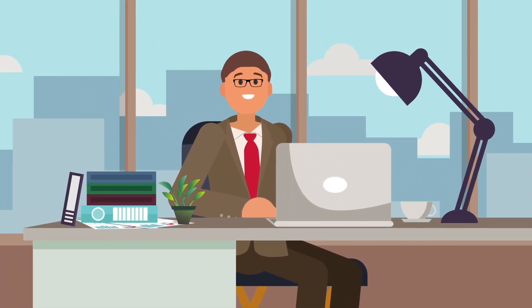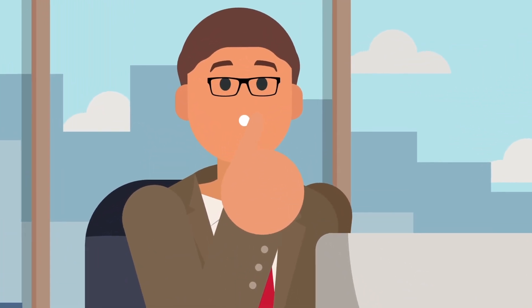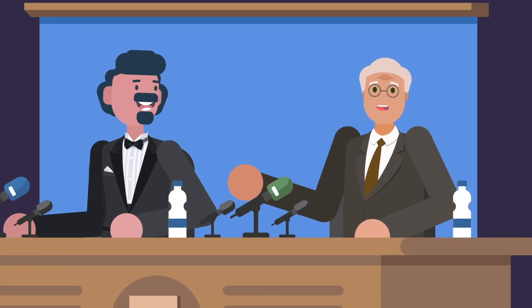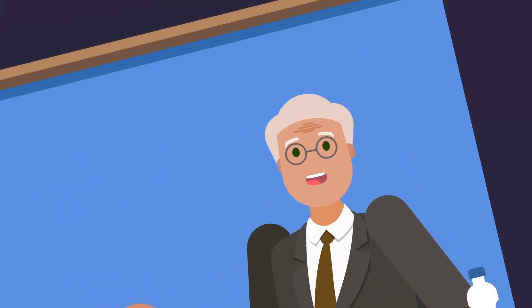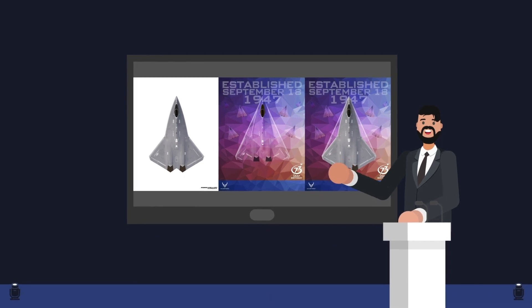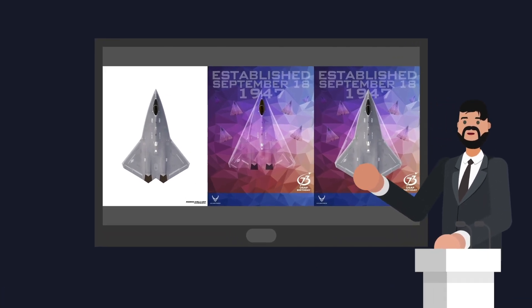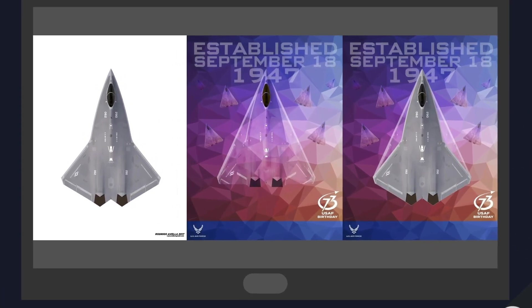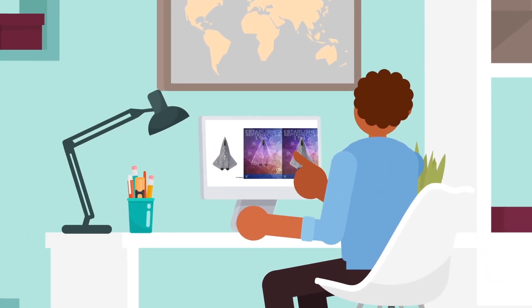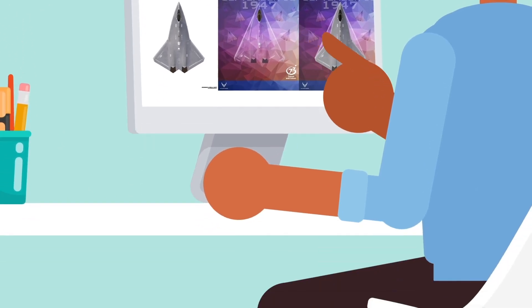As far as what this new fighter jet looks like, Roper was also mum about the details. But some astute observers suspect that the Air Force has given us hints about what to expect from this new craft. Just days after Roper's shocking announcement, the Air Force released a graphic celebrating the 73rd anniversary of the service, which prominently featured images of an as-yet-unseen aircraft, prompting many to suspect that this is a subtle nod to the new secret fighter jet.